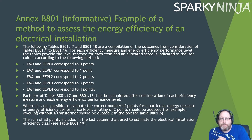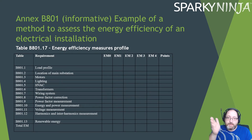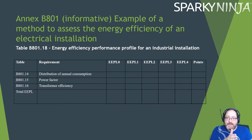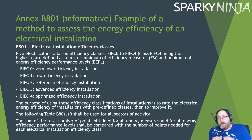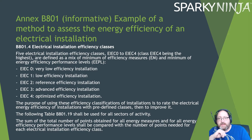The sum of all points including the last column is used to estimate the electrical installation efficiency class, done in table 19. The summary table lists load profiles, location of substations, motors, lighting, and other items down the left, with efficiency measure points and performance level points tallied up. There are five electrical installation efficiency classes, zero to four, defined as a mix of minimum efficiency measures and minimum energy efficiency performance levels.